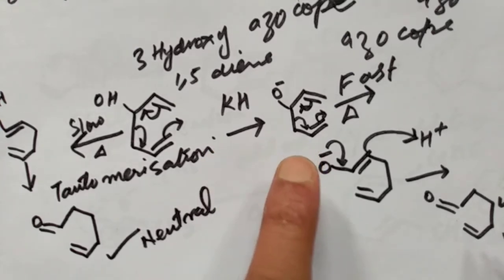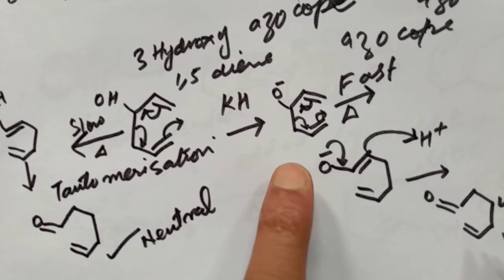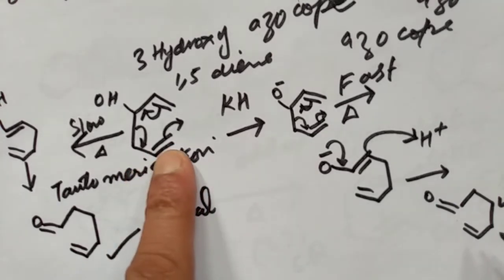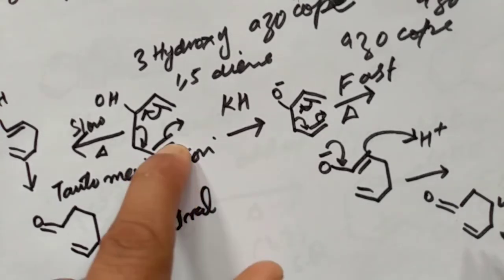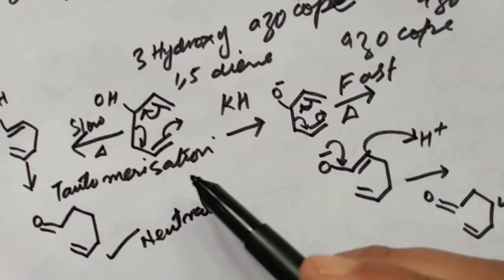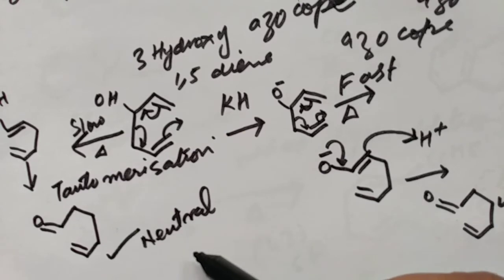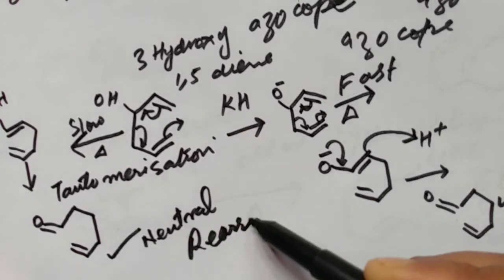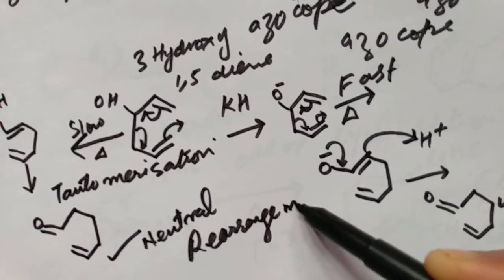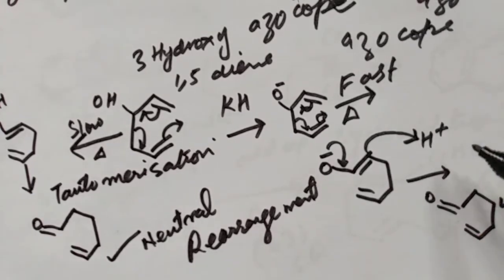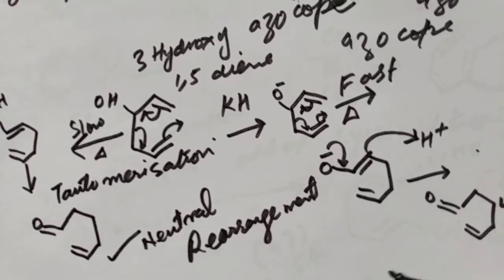In the anionic route, alkoxide is used, and this is an ionic rearrangement. In the neutral route, only neutral rearrangement occurs.